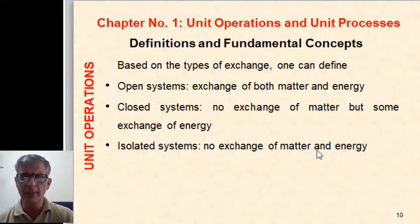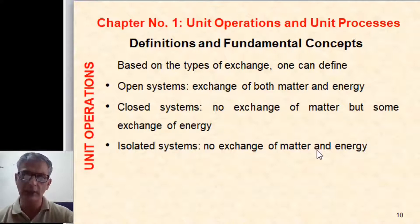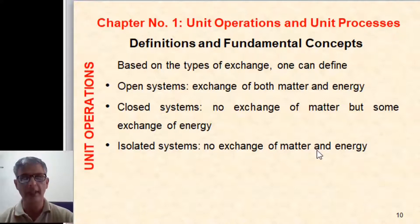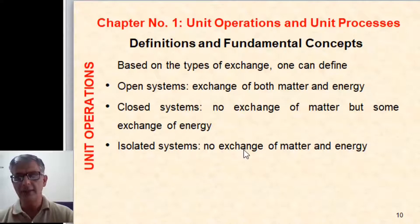For example, a cup of tea kept on a table is an open system — it exchanges both mass and energy. Mass, because some water vapors are leaving the cup, and energy, because it is losing temperature. If you close the cup with a lid, it becomes a closed system: no water vapor escapes, but it still exchanges energy. In the third case, an isolated system, if you place the tea in an insulated flask, there is no exchange of matter or energy.